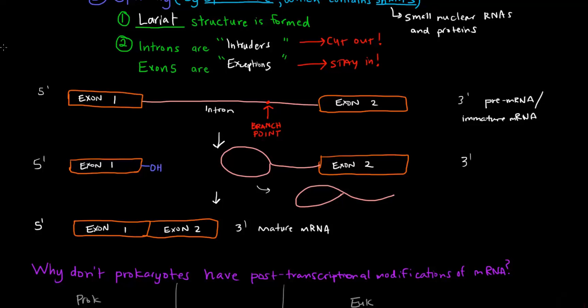This branch point, what happens is its 2'OH on the ribose ring of a certain nucleotide over here is going to go over and nucleophilically attack here at the nucleotide on the intron that's attached to exon number one. And when it does that, it bonds to itself. And that's what this is. It kind of loops around and forms this lariat structure.